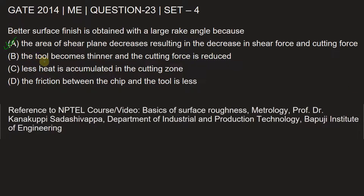Option B is wrong because it states the tool becomes thinner — that is incorrect. The chip becomes thinner, not the tool; and while cutting force is reduced, option B is still wrong. Option C states less heat is accumulated in the cutting zone — this is an indirect effect, not the direct relationship with shear force, cutting force, and shear plane area.